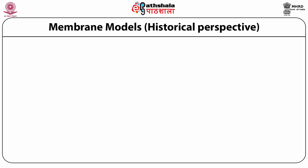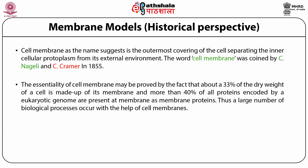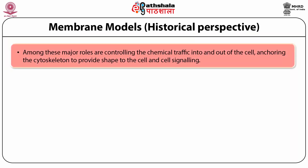Now coming to the historical perspectives of membrane models. The cell membrane, as the name suggests, is the outermost covering of the cells separating the inner cellular protoplasm from its external environment. The word cell membrane was coined by C. Nägeli and C. Cramer in 1855. The essentiality of cell membrane may be illustrated by the fact that 33% of dry weight of a cell is made up of its membrane, and more than 40% of all proteins encoded by a eukaryotic genome are present at the membrane as membrane proteins. Thus, a large number of biological processes occur with the help of the cell membrane.